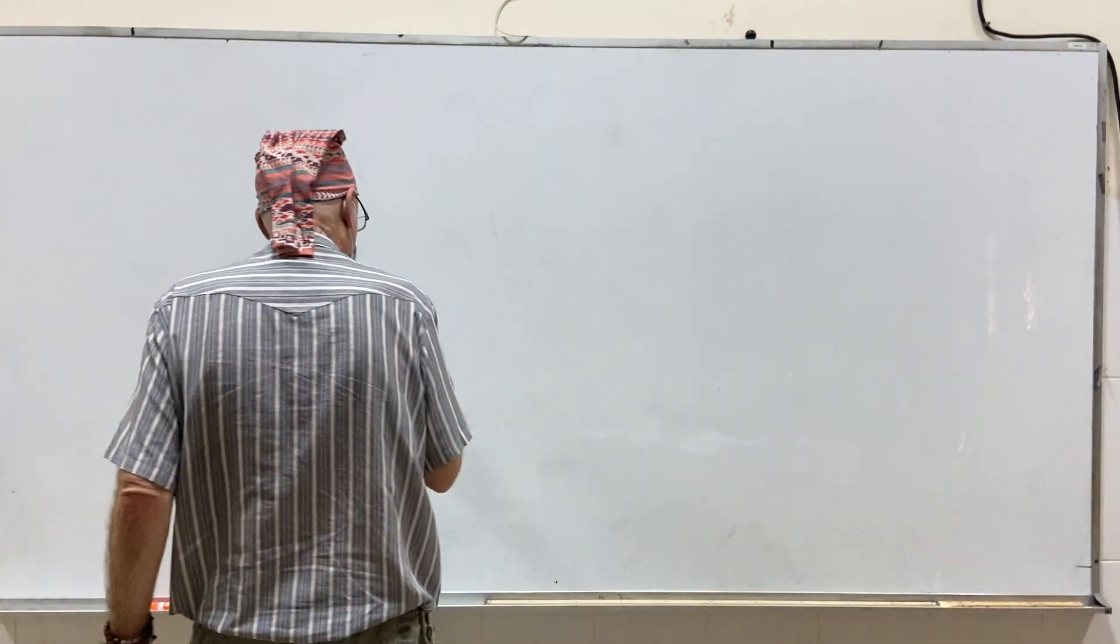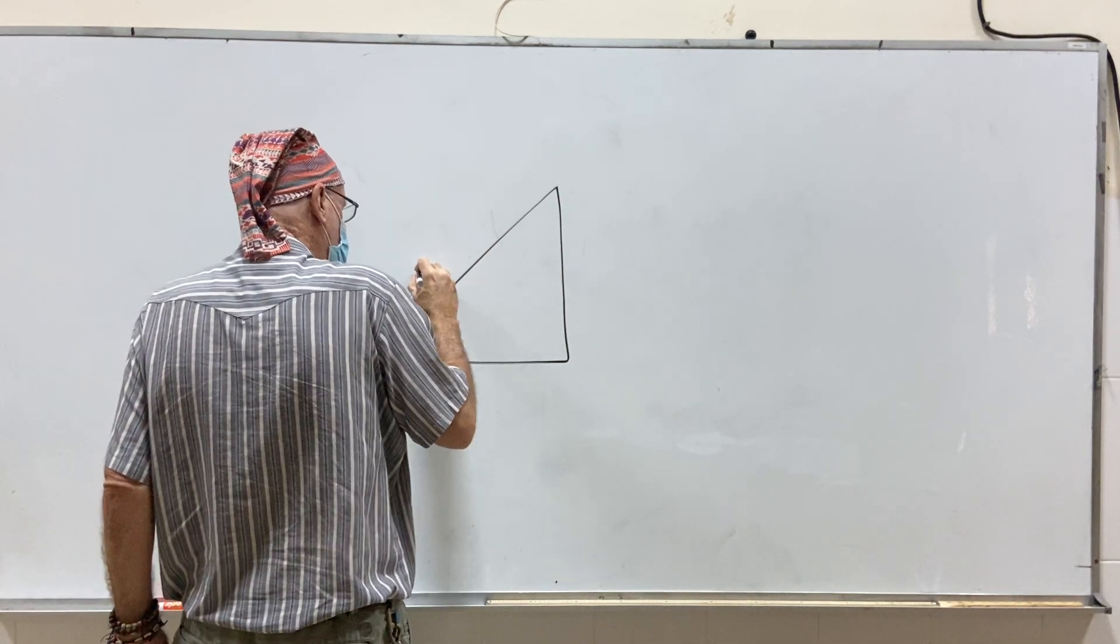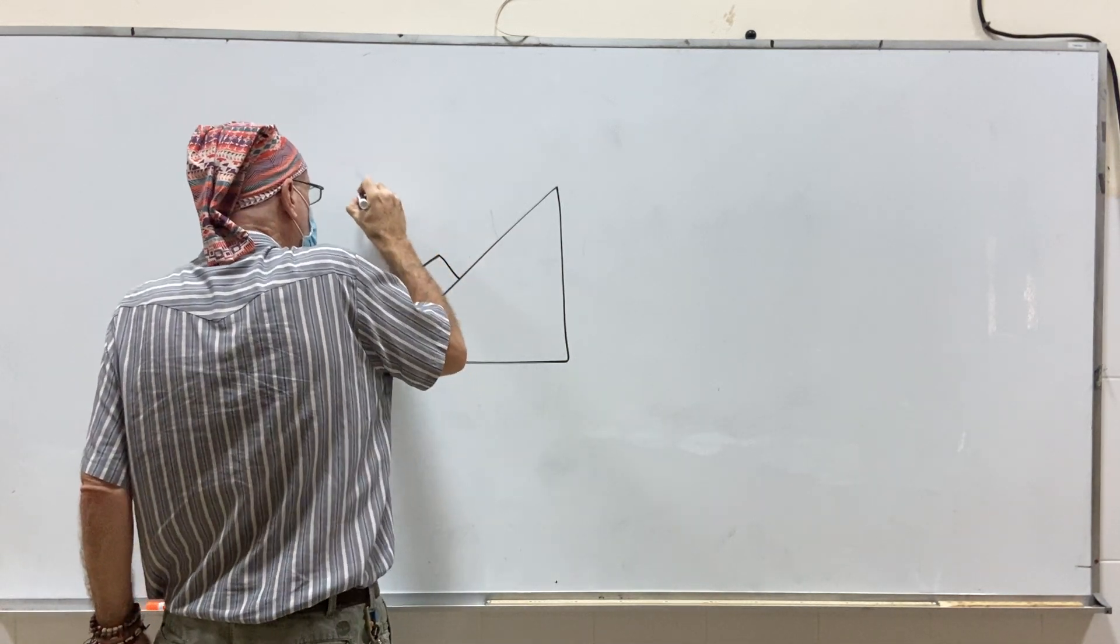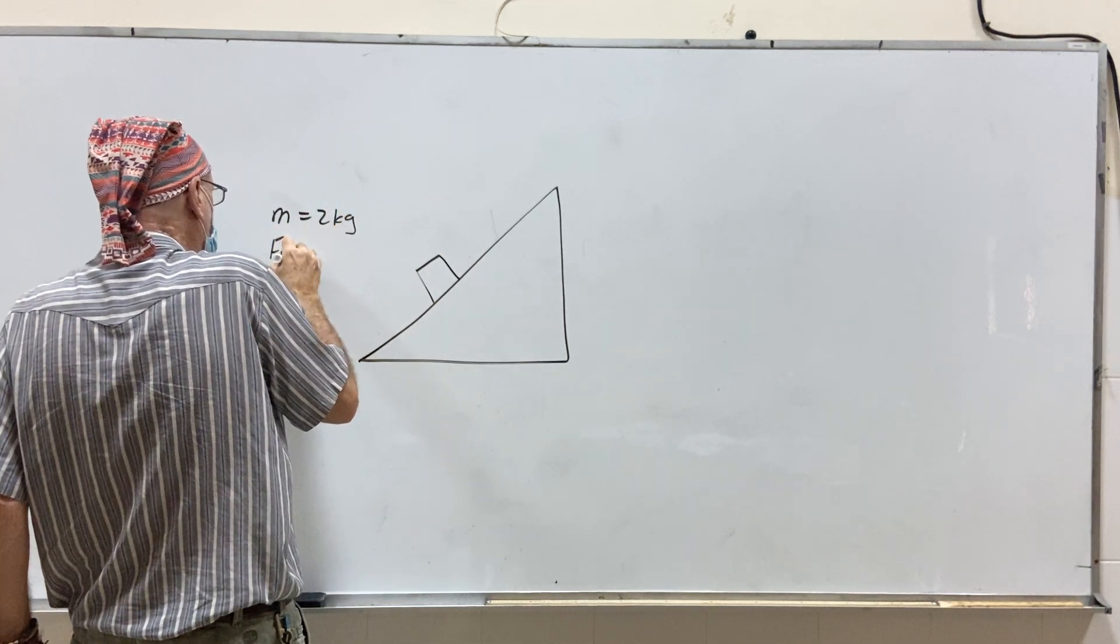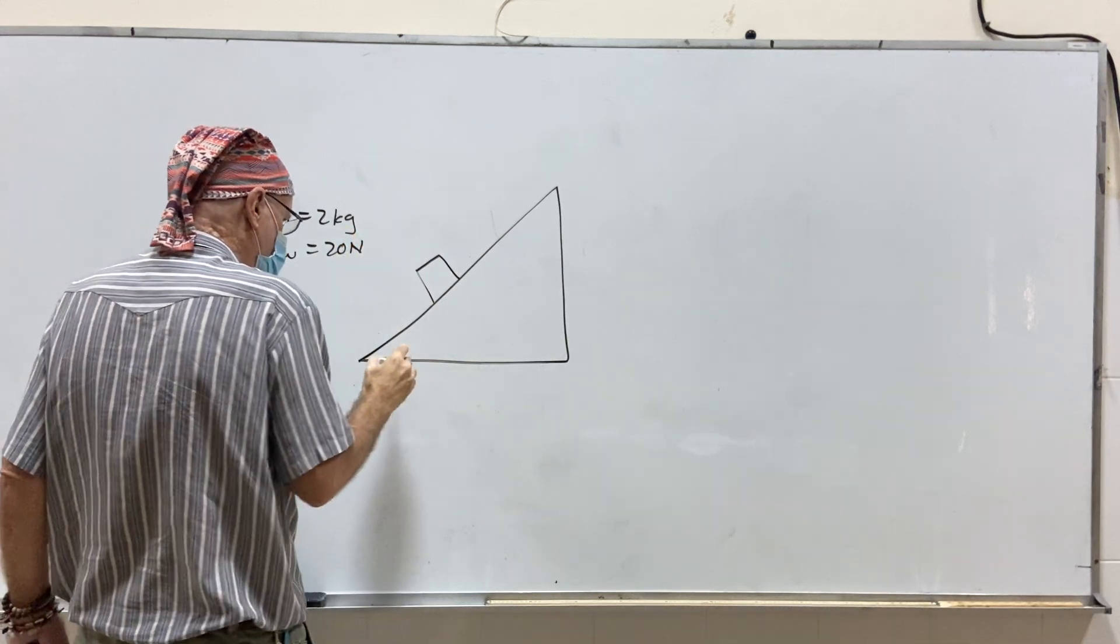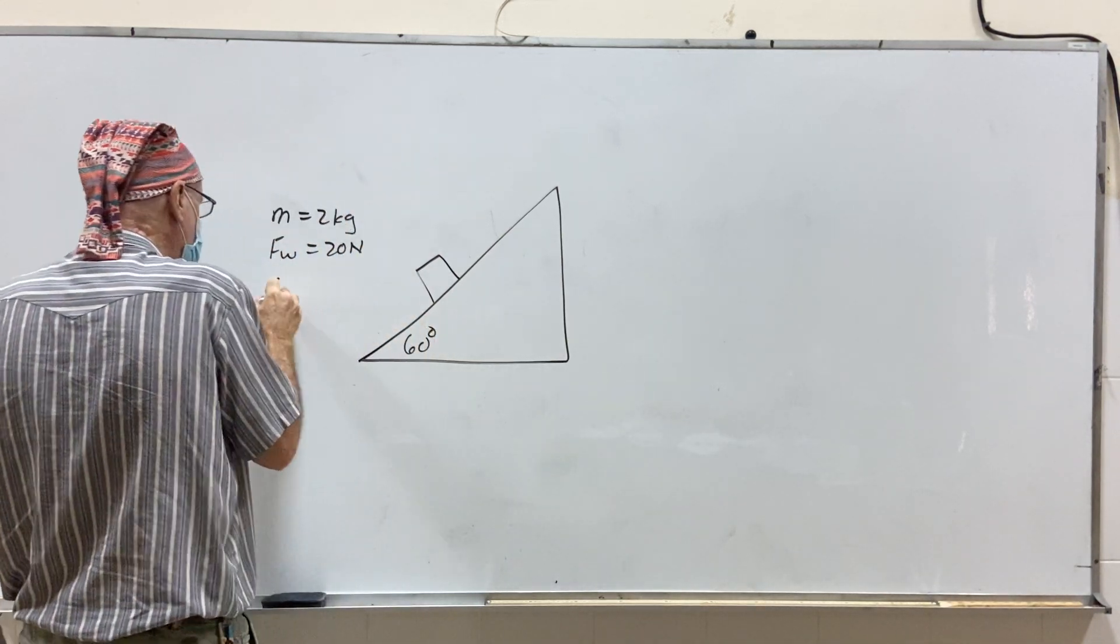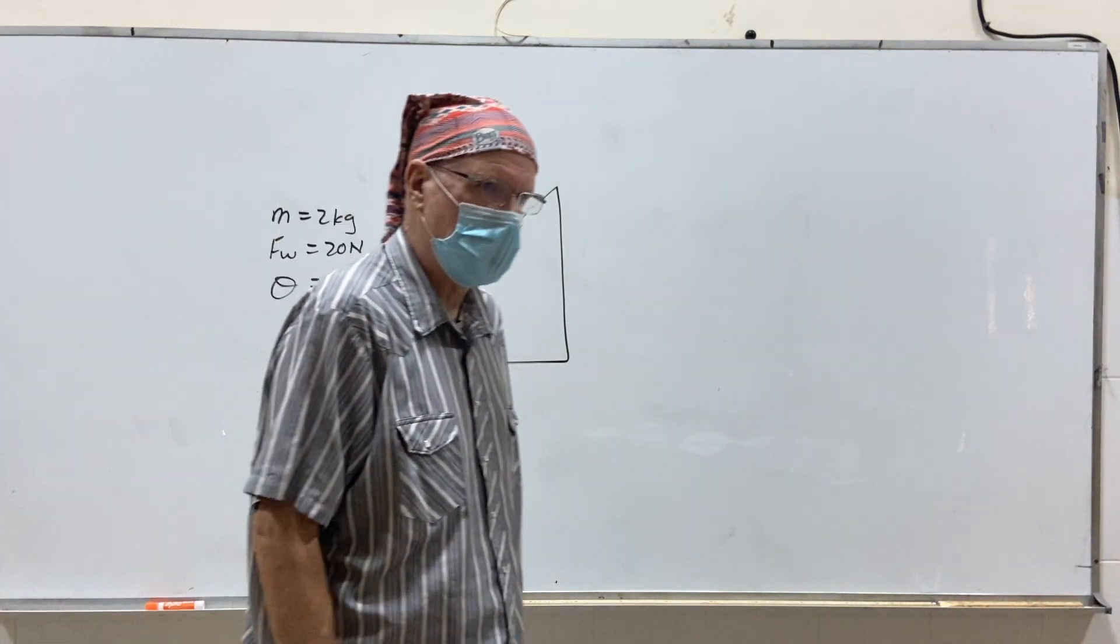So here's my drawing. Here's the book. The mass is two kilograms. Therefore, Fw equals 20 newtons, correct? 60 degrees plus 60 degrees. Are you with me? Yes or no? Yes. All right, so you need to help me out here. You need to help me. All right.